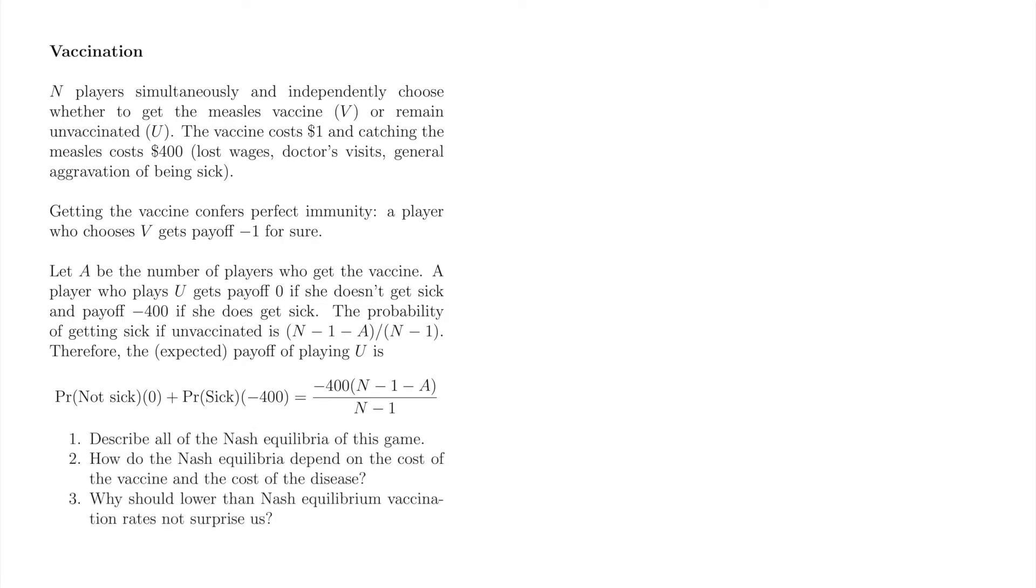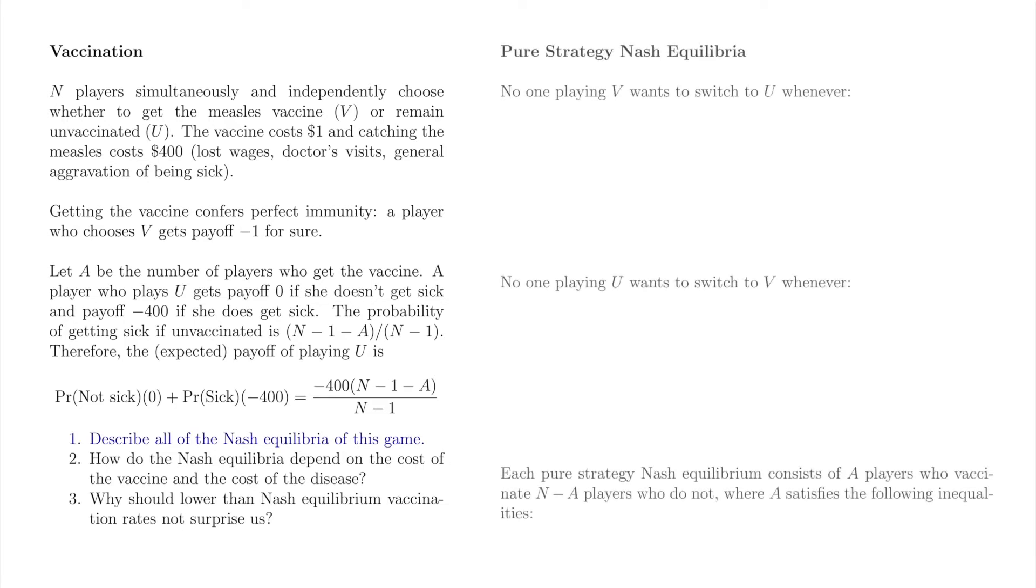We'll find the Nash equilibria of this game, and use them to find the equilibrium vaccination rate. We'll also acquire some insight into why vaccination rates in the real world might drop below the Nash equilibrium level. When item 1 asks for all Nash equilibria, we need to be sure to find both pure and mixed strategy Nash equilibria of the game. We'll start with the pure strategy Nash equilibria.